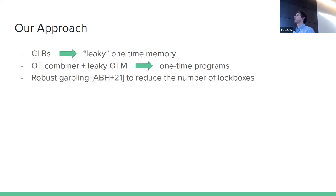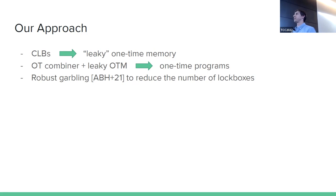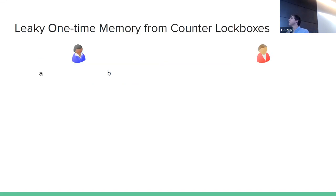We then apply robust garbling, introduced by Al-Maqbali et al. in 2021. In robust garbling, it is no longer catastrophic if the evaluator learns both wire labels for some input wires — security is still retained. This lets us use leakier one-time memories, which lets us use fewer lockboxes, achieving the asymptotic result: a constant number of lockboxes per input wire.